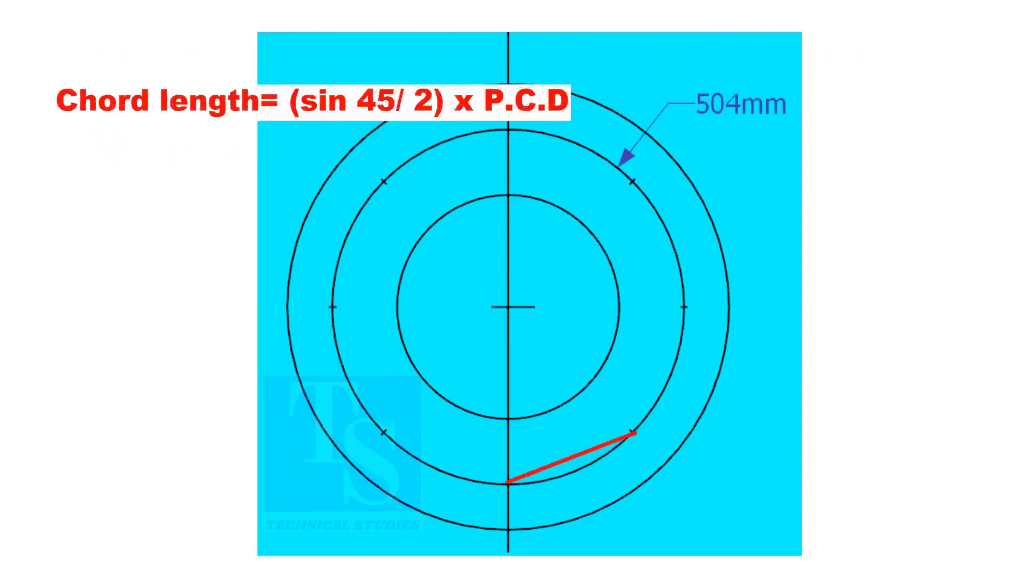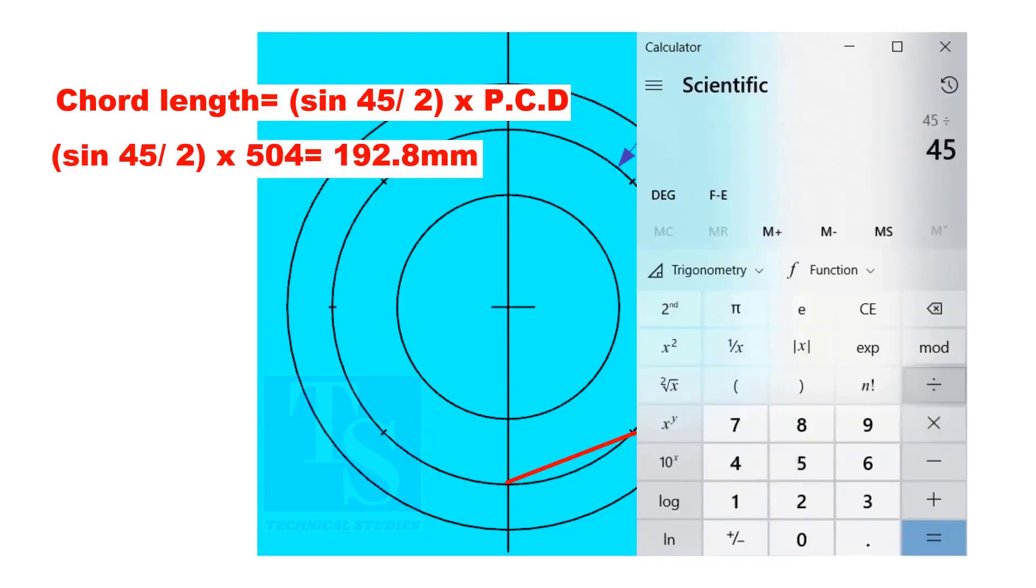Cord length equals sine 45 divided by 2, multiplied by PCD. The cord length is 192.8 millimeters.